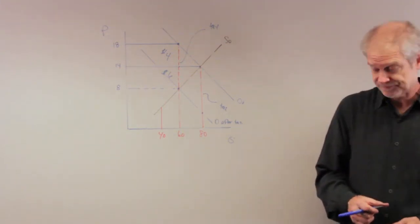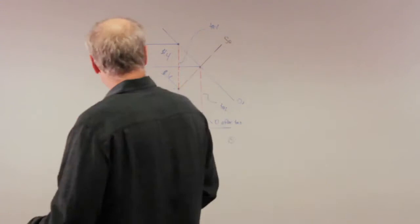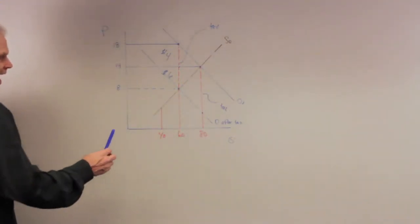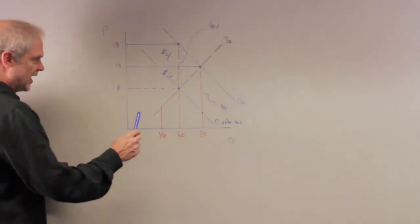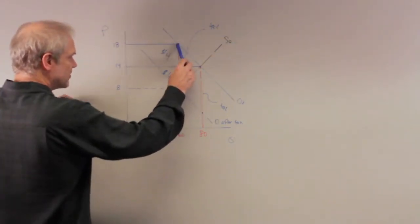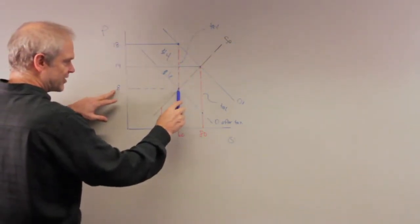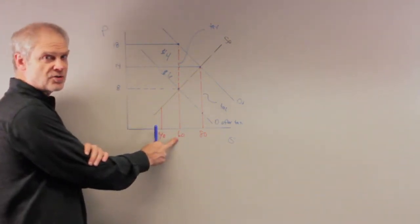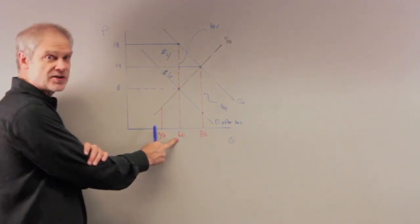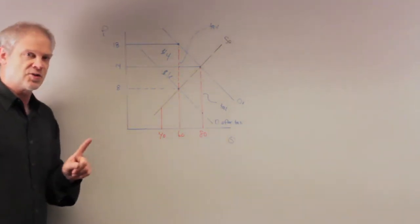Well, it's pretty straightforward, right? After the tax, how many units are being sold? So you have to say to yourself, okay, after the tax, consumers are paying $18, sellers are receiving $8, and the total sales in this market are 60 units. So 60 units are being sold.